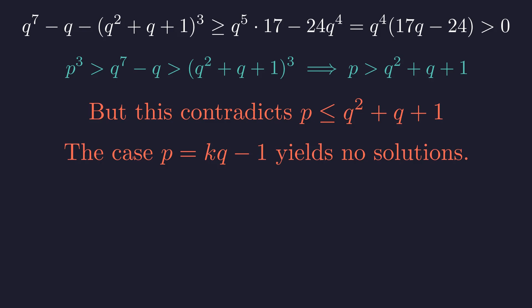A similar analysis for the case p equals k times q minus 1 can be performed, and it also yields no prime solutions.